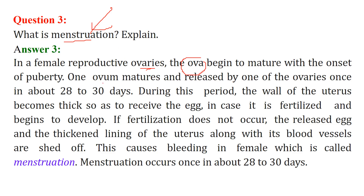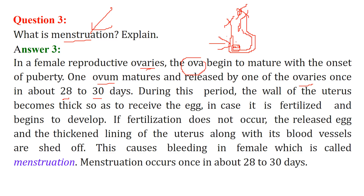Once the ovum matures, in about 28 to 30 days it is released by one of the ovaries. At this period the wall of the uterus becomes thick so as to receive the egg. If fertilization doesn't occur, the released egg and the thickened lining along with the blood vessels are shed off every month, causing bleeding in females, which is called menstruation.